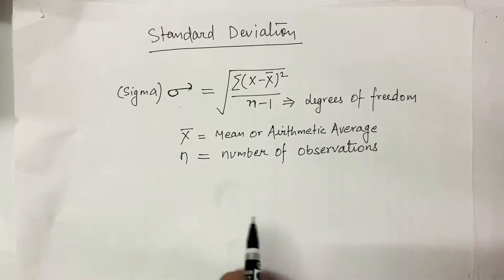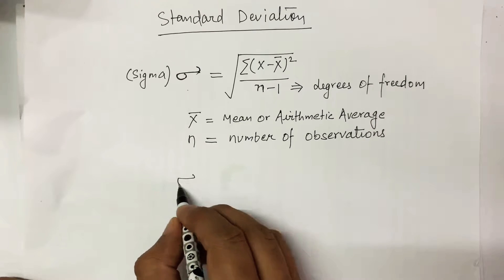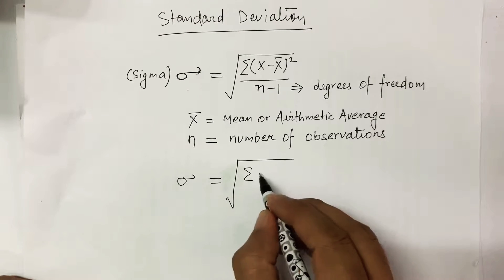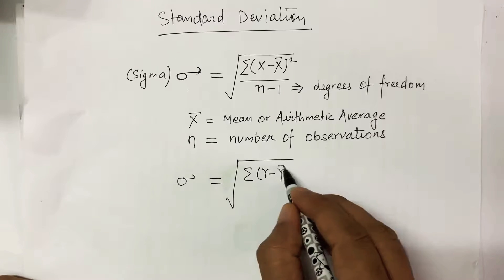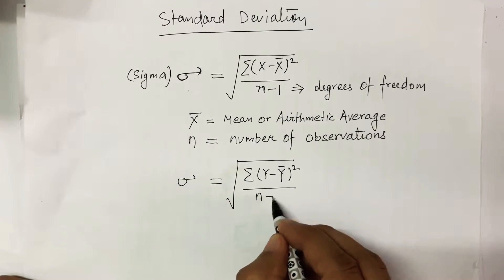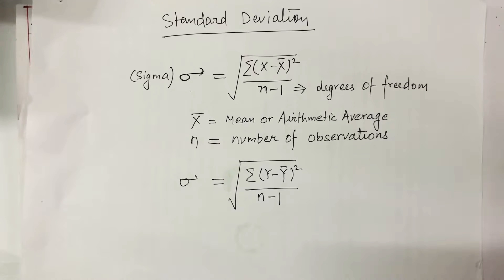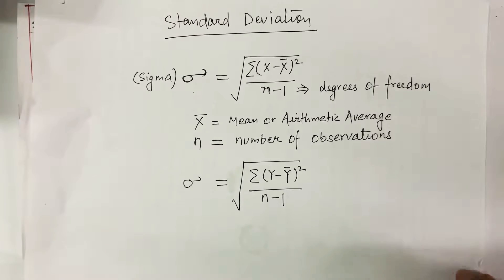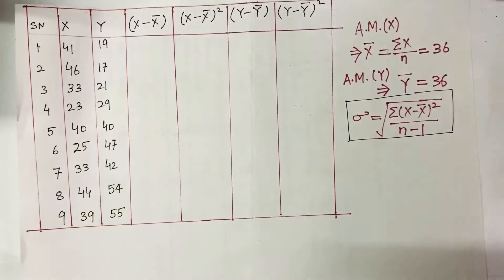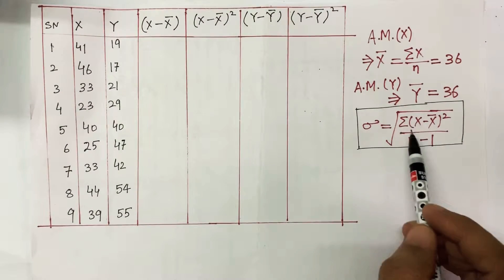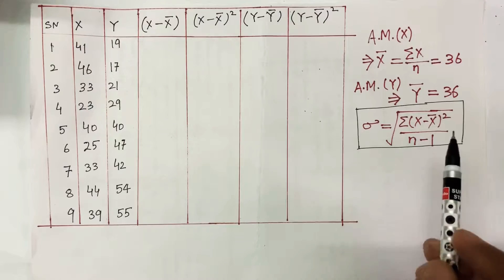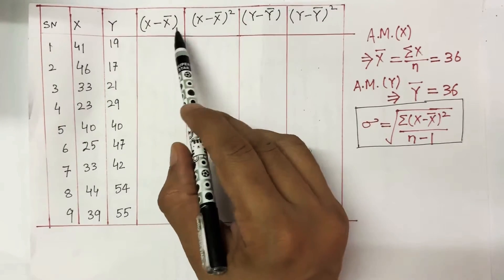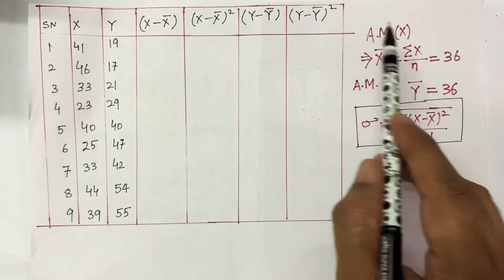The same way, if I want to extend this formula for series Y, since in my data set I have two different series, the formula is going to be the square root of summation of (Y minus Y-bar) squared divided by n minus 1. Now let's start with the problem. In the numerator I require (X minus X-bar) squared and in the denominator I need n minus 1. I already know X-bar is 36.